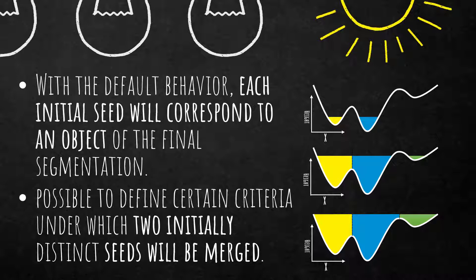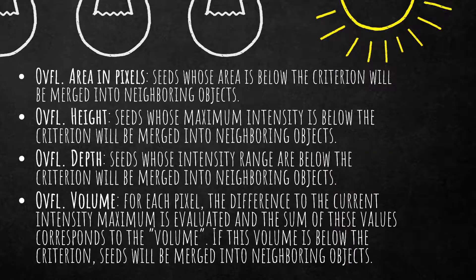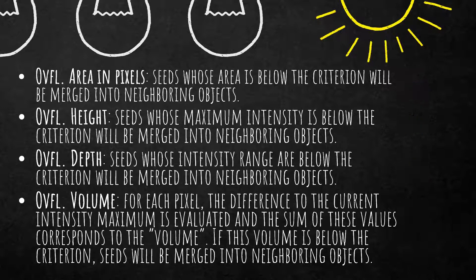With the default behavior — which you can change — each initial seed will correspond to an object of the final segmentation result. But you can also define certain criteria under which two initially distinct seeds will be merged. There are four different criteria you can use to define when objects should be merged, and you can combine up to three of them in a single algorithm.